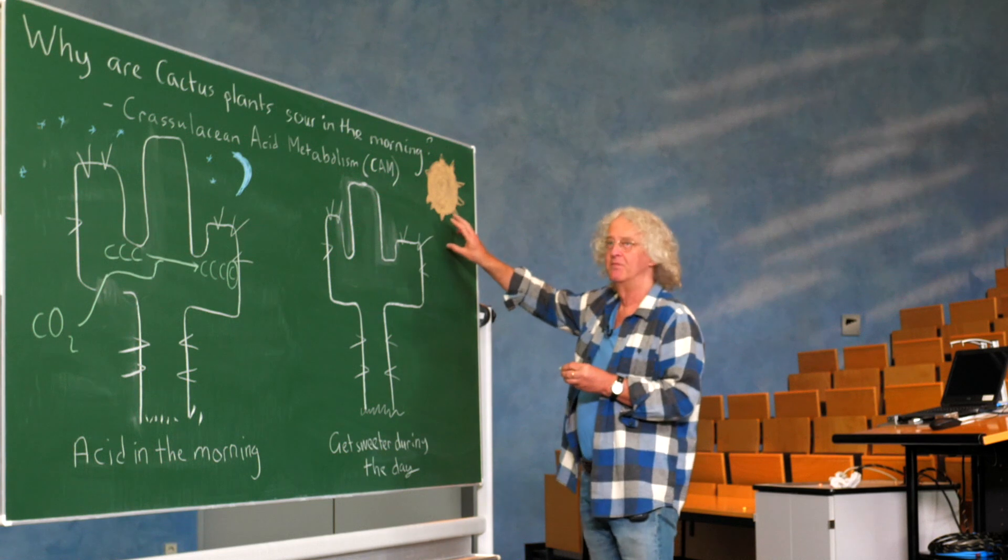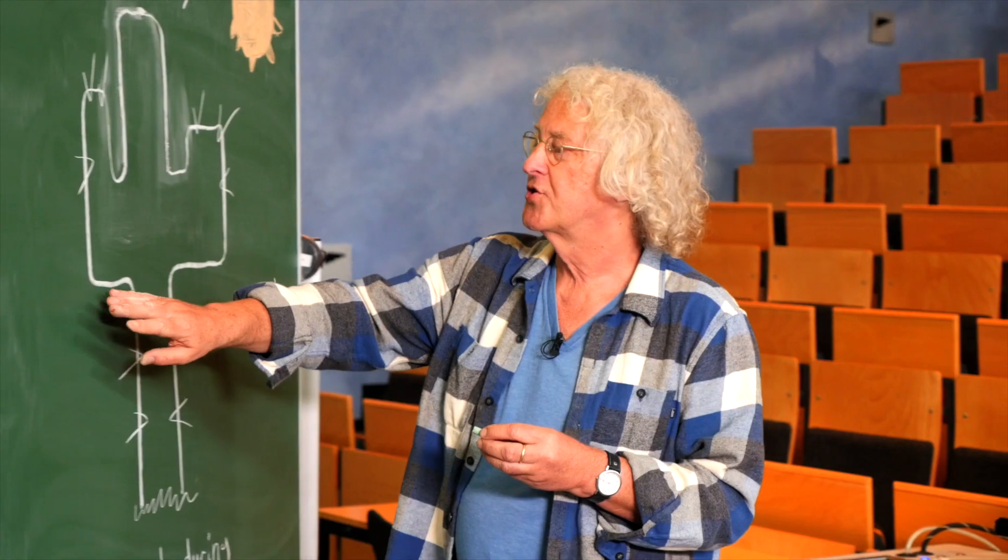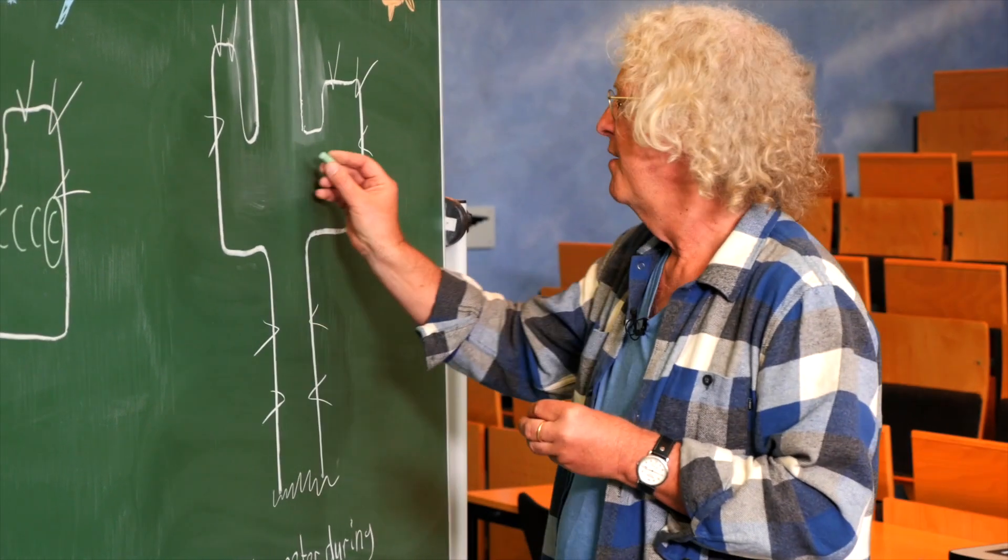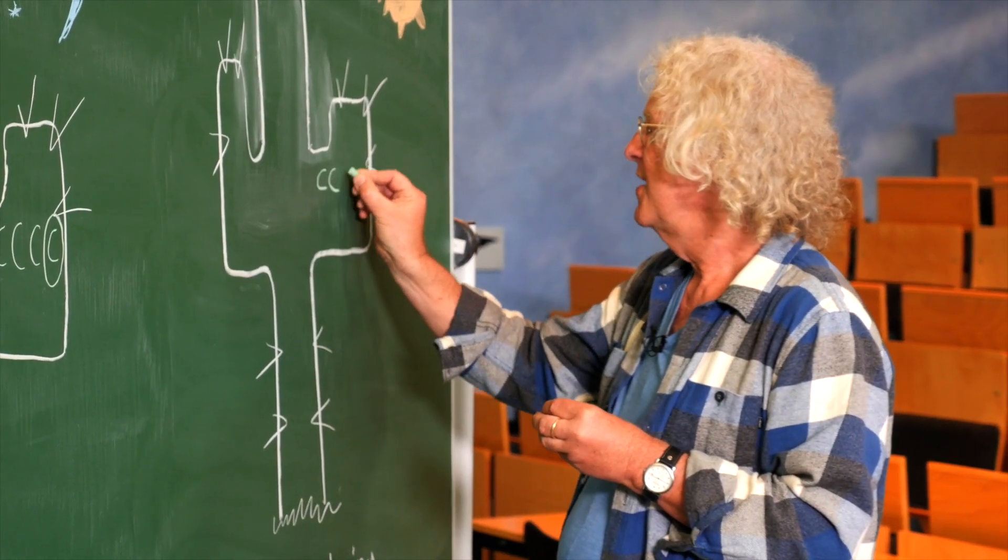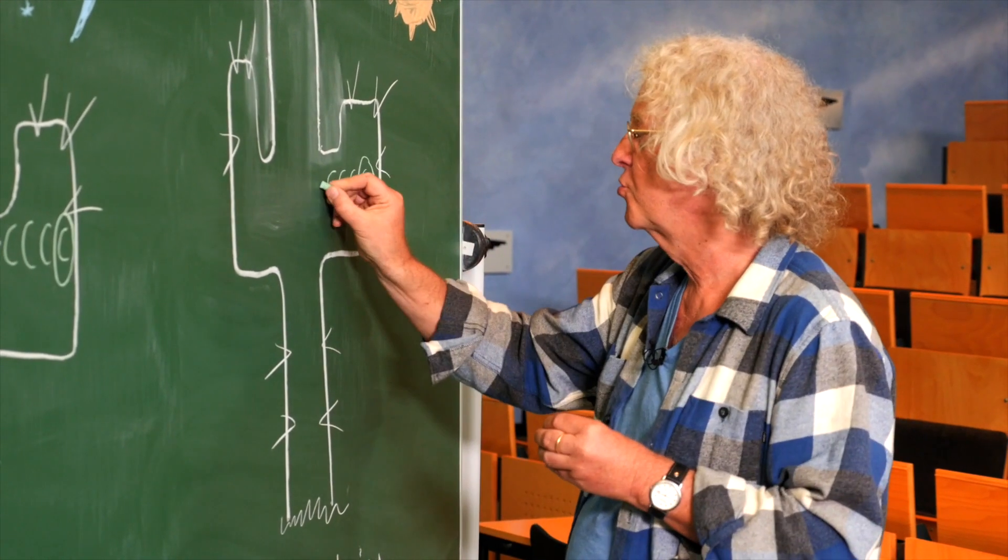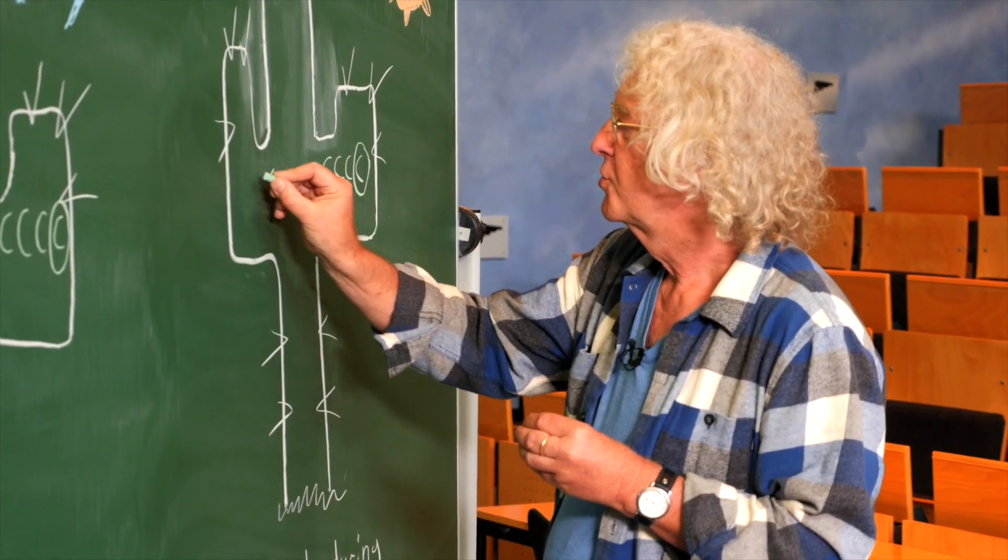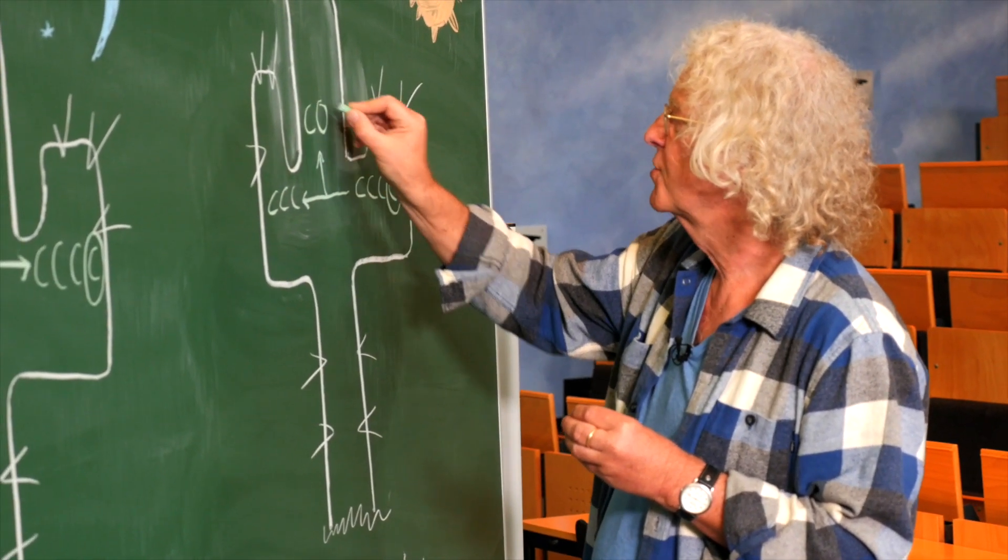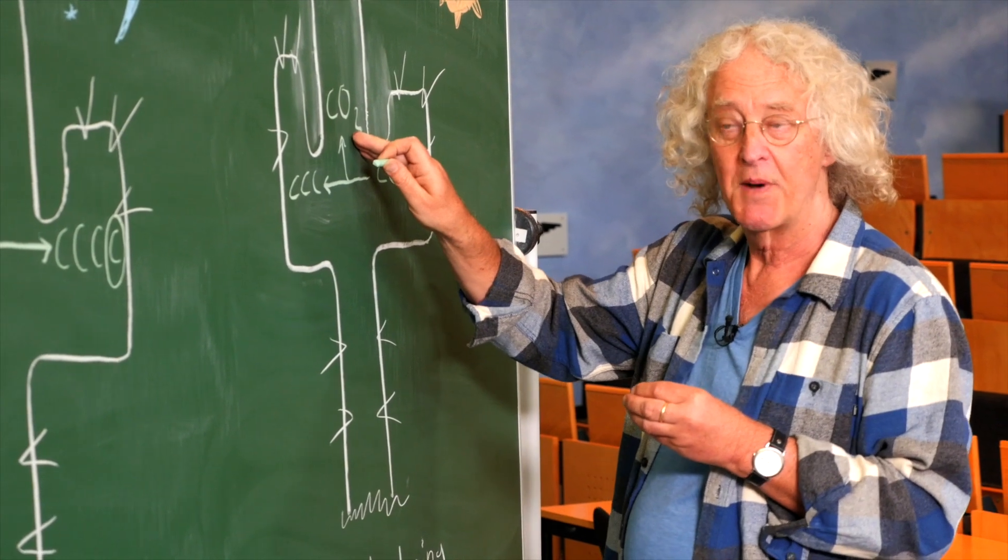When the sun comes up, the stomata shut. And then they take this four carbon compound, this carbon dioxide store, turn it back into the three carbon compound, and release carbon dioxide inside the plant.